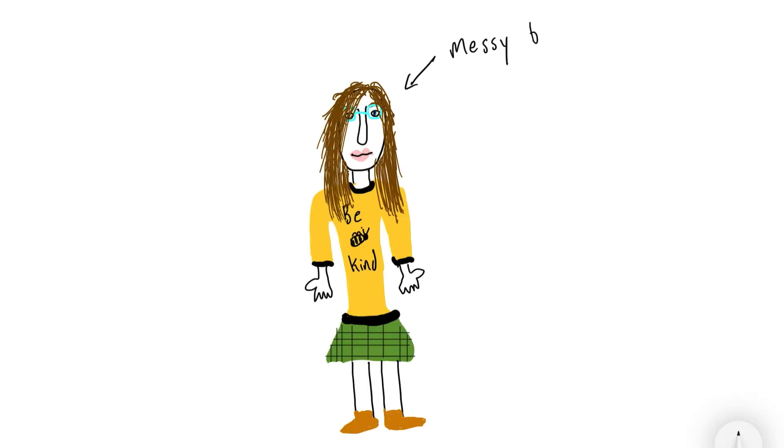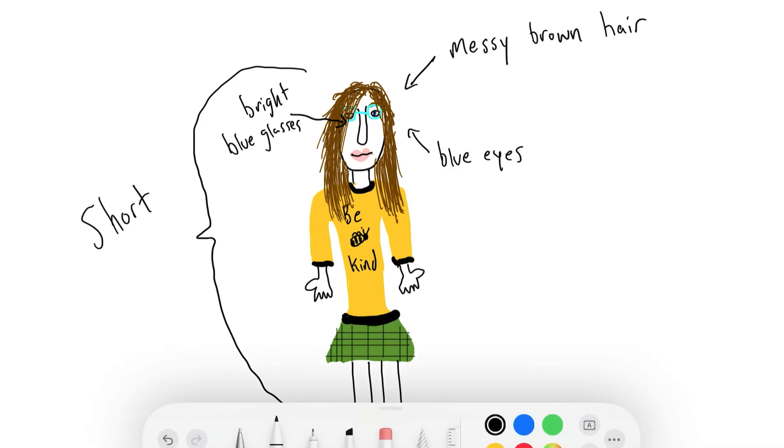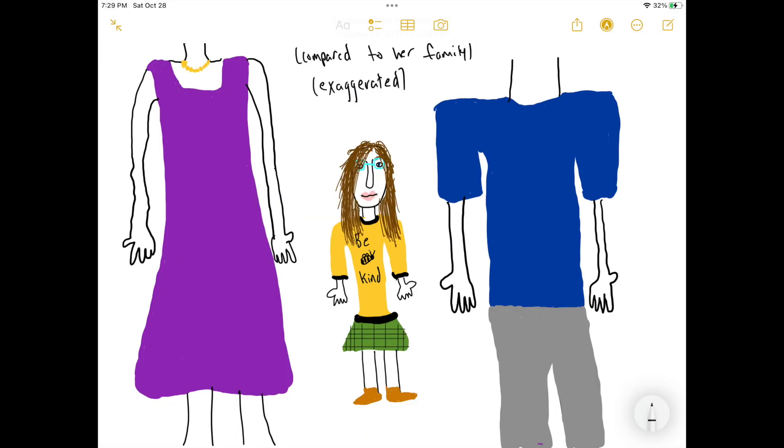The way that scientists use physical properties to describe matter is very similar to how authors will use characteristics to describe characters. Here I have my character Bobette, who has messy brown hair, bright blue glasses, bright blue eyes, and is short compared to the rest of her family. I'm using characteristics to describe Bobette, similarly to how scientists will use physical properties to describe matter.